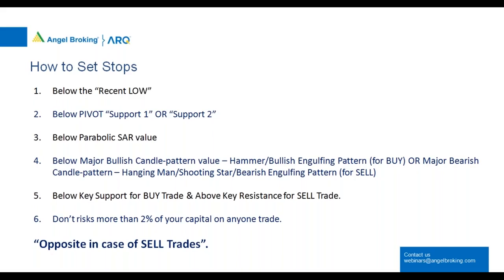Never risk more than 2% of your capital on any particular trade. If you risk 2%, 50 consecutive losing trades would wipe out your capital. At 5%, 20 losing trades eliminate you. Many people risk 10–30% on a single trade — at 30%, just three bad trades wipe you out. You need decent starting capital and must cap risk at 2–3% maximum. The same strategies shown on the buy side apply in reverse for sell trades.